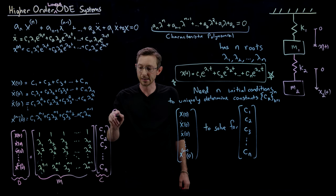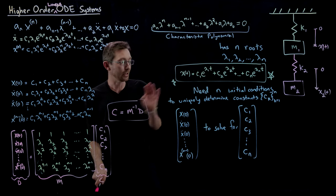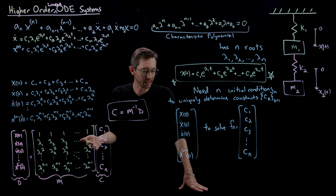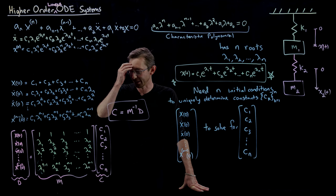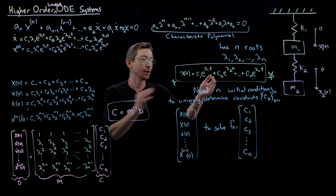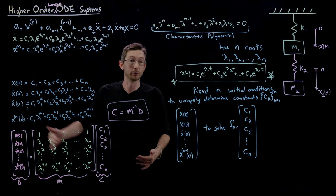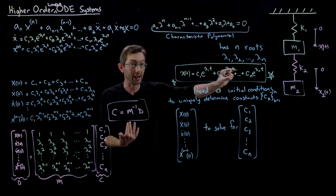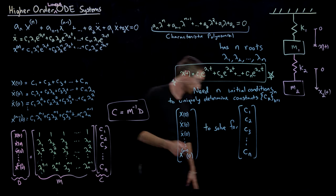Anyway, the point is: you have the basic skills and knowledge to solve for these things from first principles. If I have data evaluated at time zero — x, x-dot, x double-dot — compute those derivatives, plug in zero, and see if you get something you can solve for. C = M⁻¹ D — that's how you solve for those coefficients. Thank you.